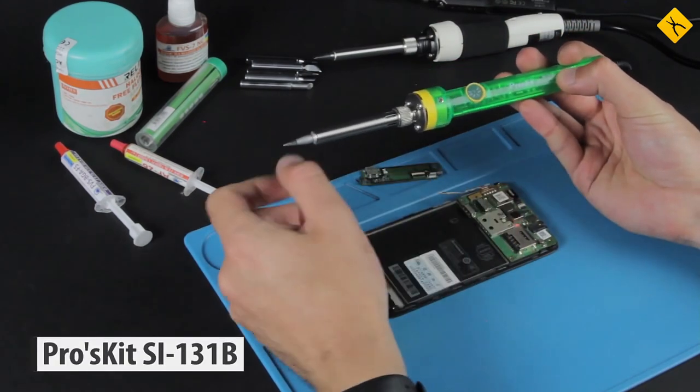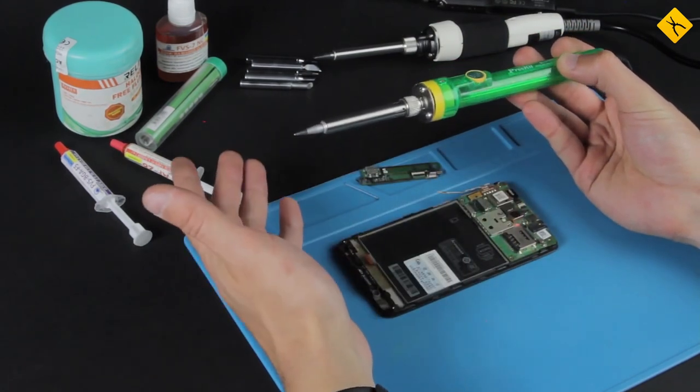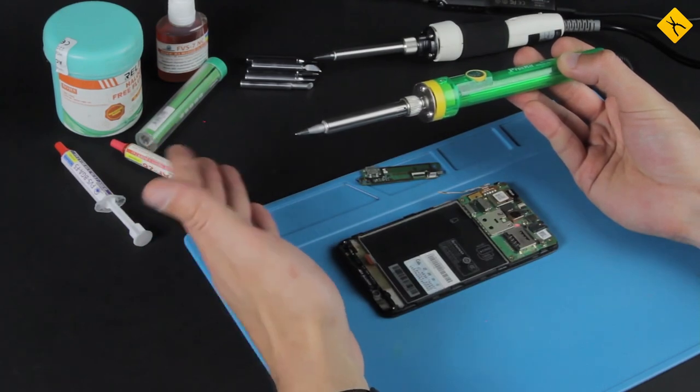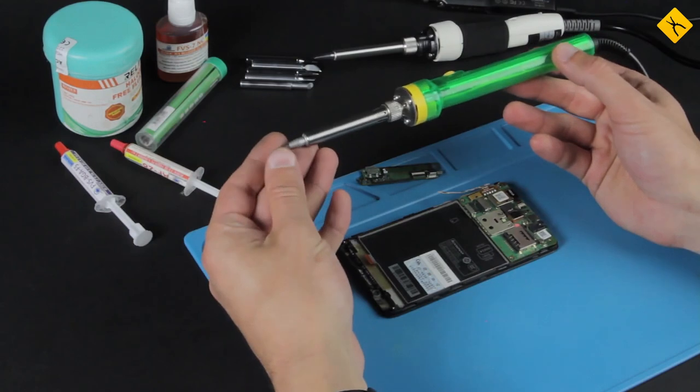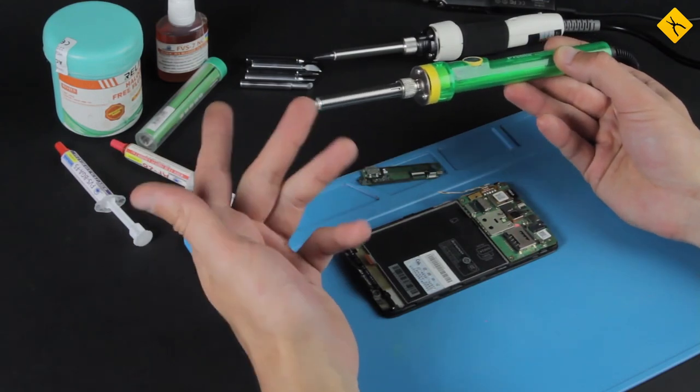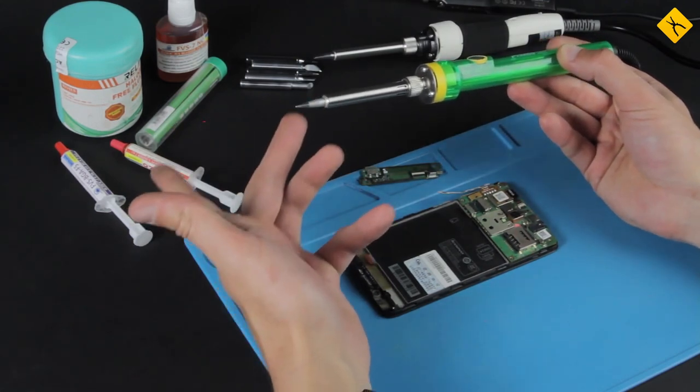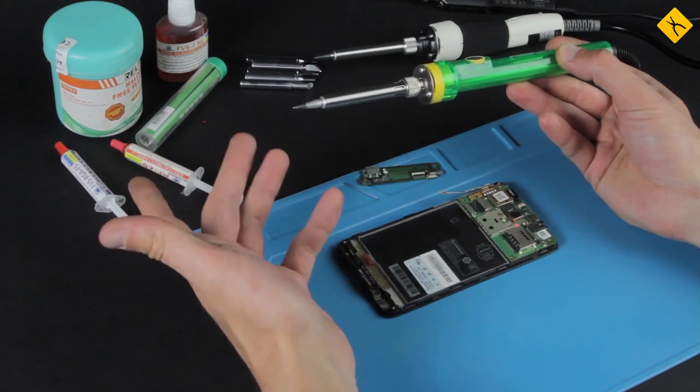Let's start with Proskit SI13-1B, a temperature-controlled 70W soldering iron. Thanks to the temperature control function you can use lead-free solder with a low risk of overheating circuit boards in cell phones or other electronics.